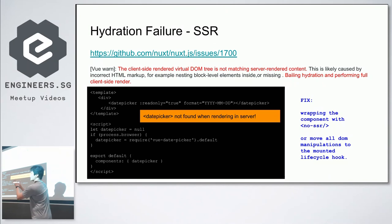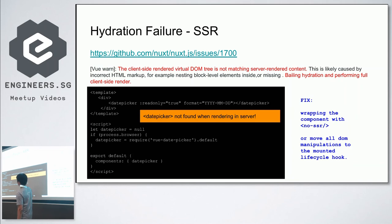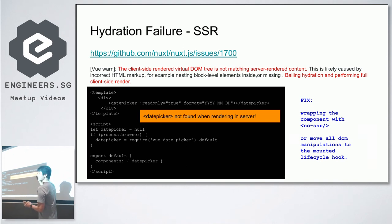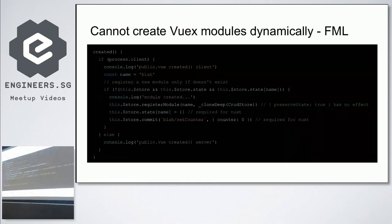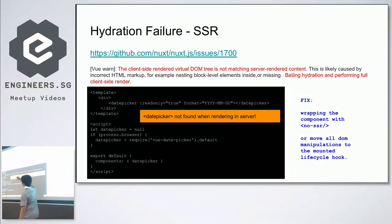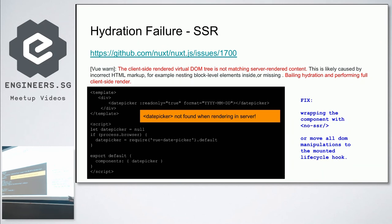Hydration failure occurs when the DOM on the client side doesn't match the server side. For example, a date picker component loaded only in the browser: when SSR tries to serve the page, it warns that the component isn't found. The fix is to wrap the component in the `<no-ssr>` tag to tell Nuxt not to render it on the server side, or move DOM manipulation to the `mounted` hook.